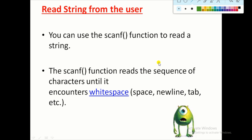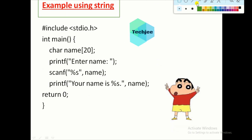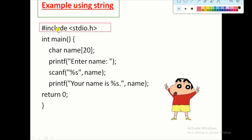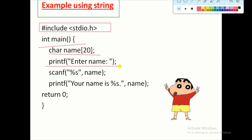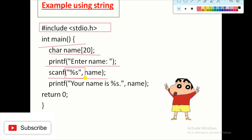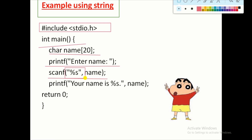Now let's practice a simple example using strings. First, include the header file 'stdio.h', then initialize the main function. Declare the string: 'char name[20]'. Then use printf to display a message — 'Enter the name' — so the user knows what to input. Then use scanf to take the value from the user. Inside the scanf bracket, write '%s' (percent-s), which indicates we are storing a string type value, and the variable name is 'name'.